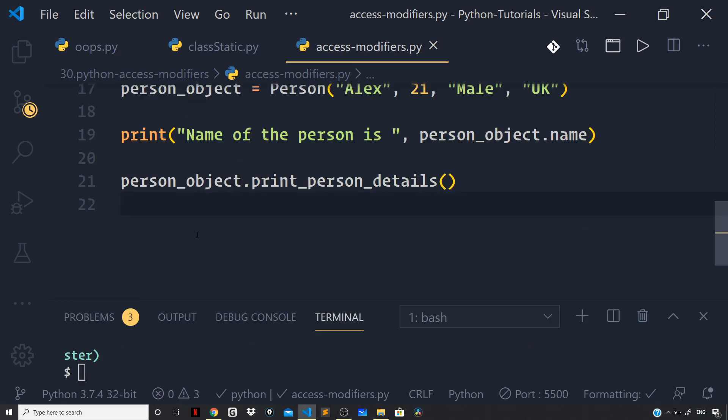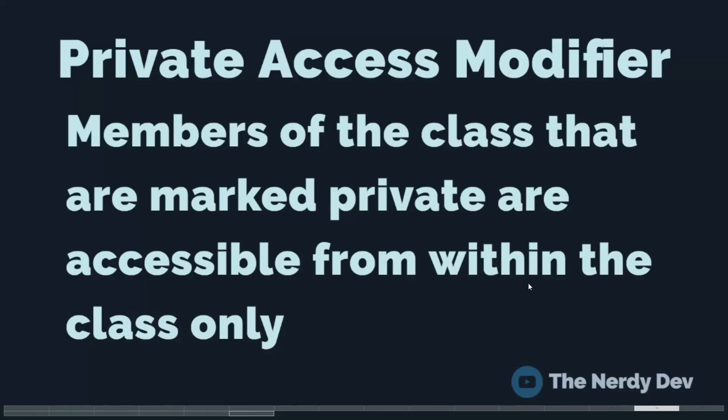Now let us move forward and understand about the private access modifier. The members of the class that are marked private are accessible from within the class only, and that is why this is the most secure access modifier that Python provides us. In order to mark a data member or a method as private, you just have to prefix their name with a double underscore.